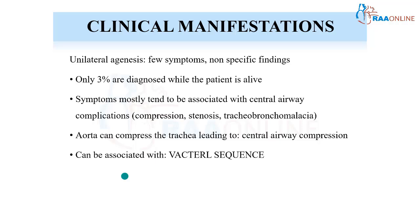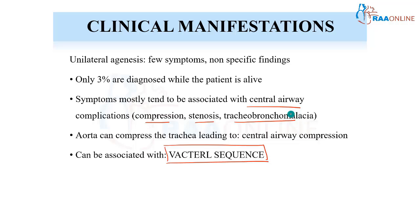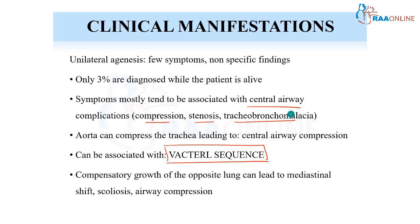One of the commonest associations of pulmonary agenesis is the VACTERL sequence — vertebral anomalies, tracheoesophageal fistula, and related conditions. The manifestations are usually related to airway anomalies: the airway can undergo compression or stenosis, tracheobronchomalacia can be present, and vascular anomalies such as the aorta compressing the trachea can lead to airway compression. In unilateral agenesis, the opposite lung undergoes compensatory growth.